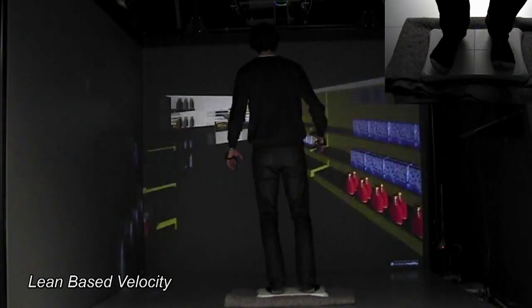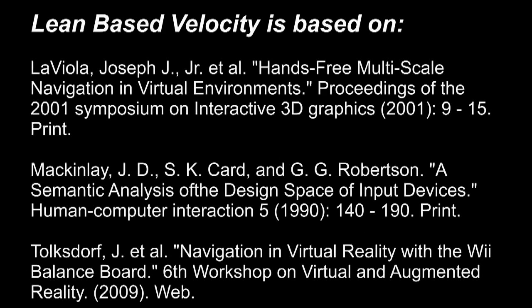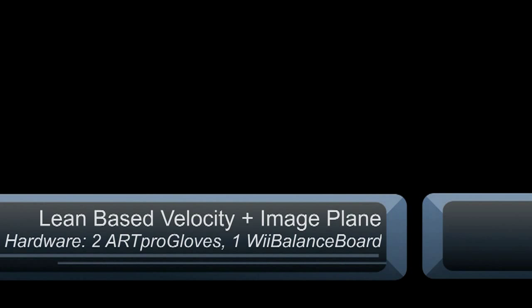Lean-based velocity is the first travel method we combined with image plane. As image plane relies on the two arrow gloves and lean-based velocity is executed using the balance board, the two methods are easy to combine because they don't influence each other. Therefore, even selected objects do not impair the ability to move.